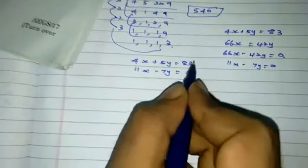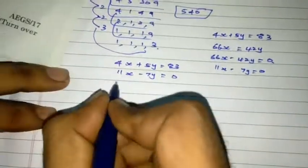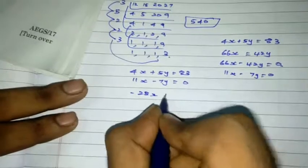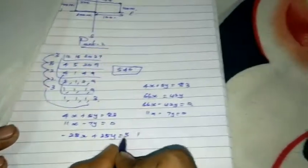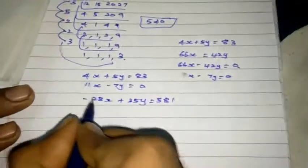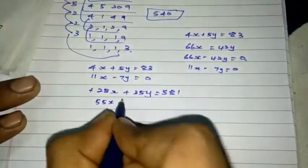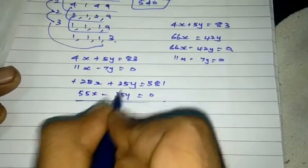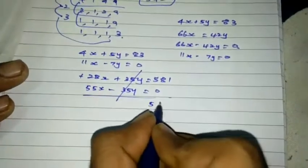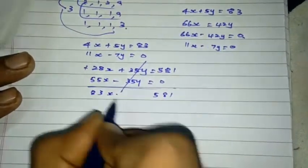So, the first equation is 7 all multiply. The second equation is 5 all multiply. Y cancel all the X value. So, check out how much difference we can see. So, minus 28X plus 35Y equals 581. So 55X minus 35Y equal to 0. So 35Y and 35Y cancel 581.